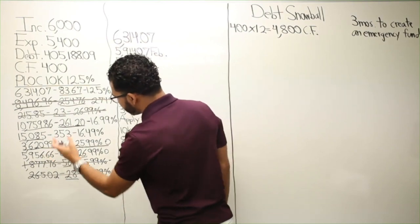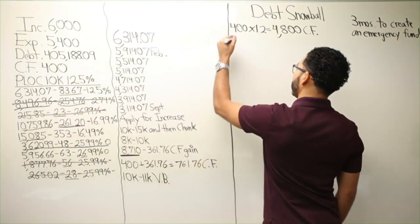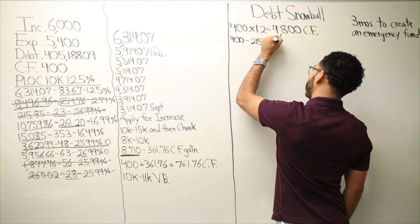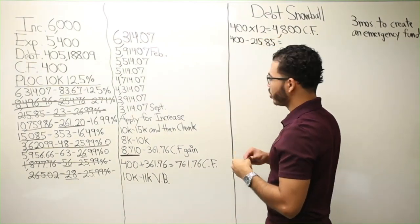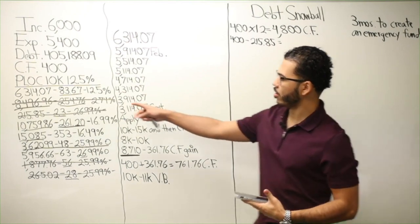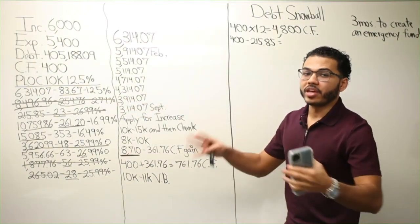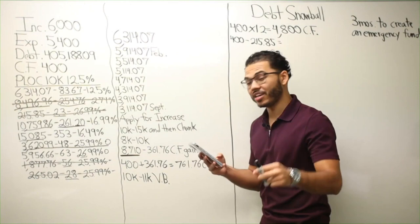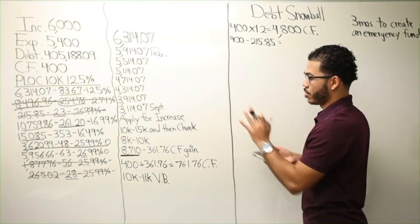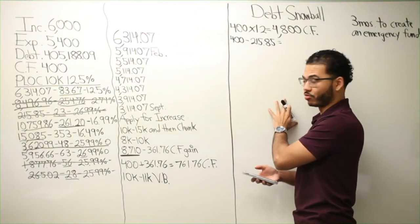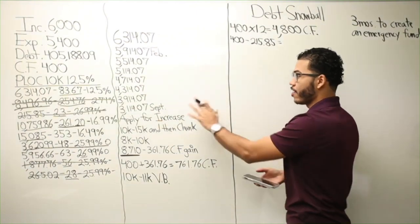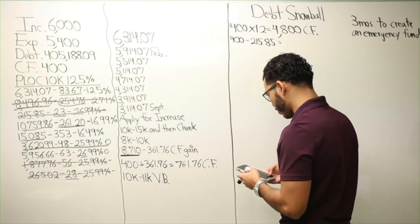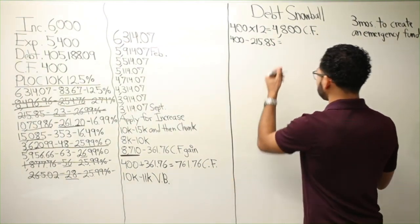With the snowball, the first debt to pay off is the smallest one — $215.85. With $400 cash flow minus $215.85, that leaves $184.15 remaining for the month of January. Now $265.02 minus the monthly payment for January of $28, minus $184.15, leaves me with $52.87 remaining on the second smallest credit card at the end of the first month.